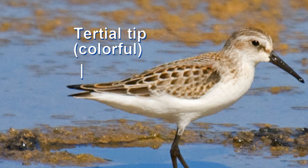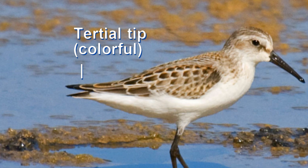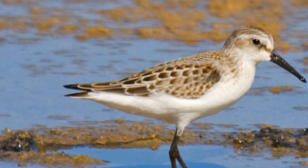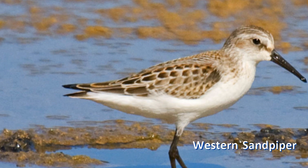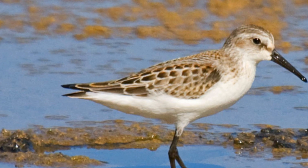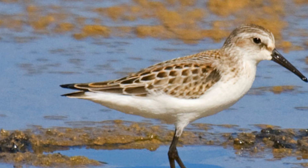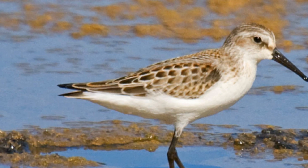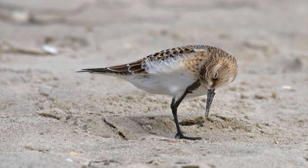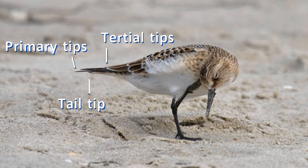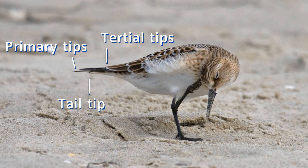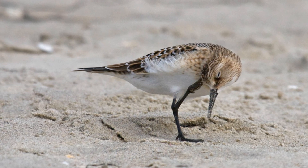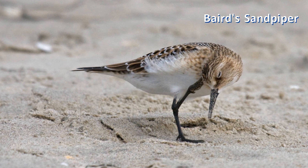The tertials are three feathers of the inner wing that cover up most of the folded primaries and tail on shorebirds. Primaries are black, and tertials often have colorful edges or internal patterns. Undertail coverts are body feathers that reach almost to the end of the very short tail. Always note the tertial feather pattern and how far the primary tips extend beyond the tertials and tail, if at all. This is a very important field mark for separating look-alike species of shorebirds.